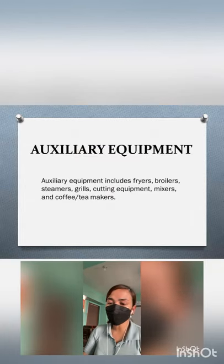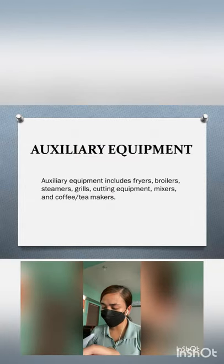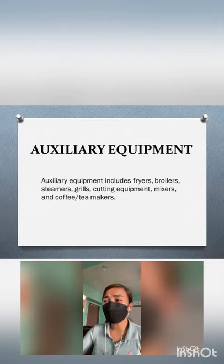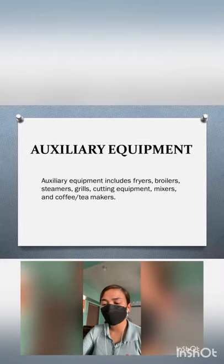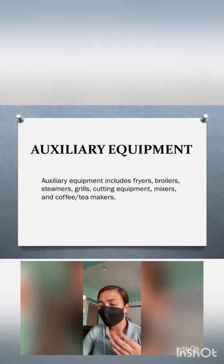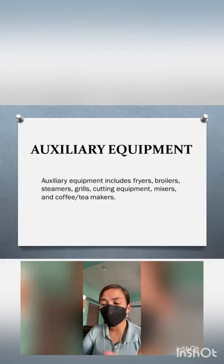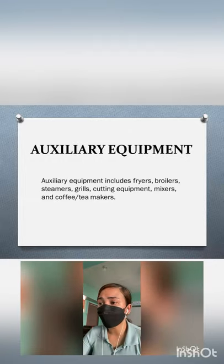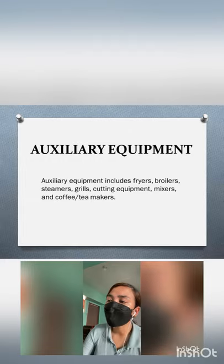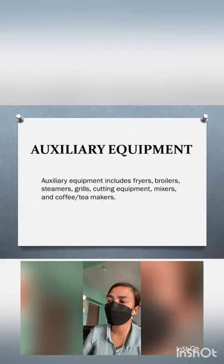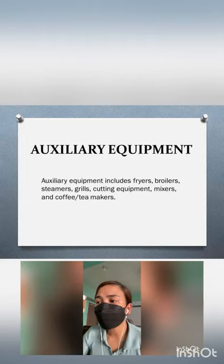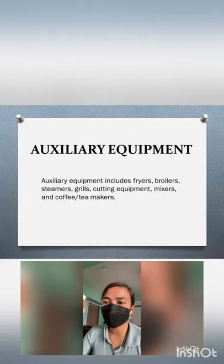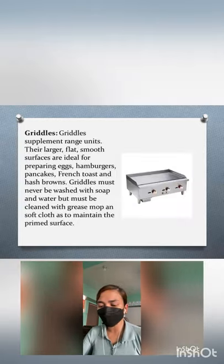Next, we have auxiliary equipment. When we say auxiliary, it means providing supplementary or additional help and support. Auxiliary equipment includes fryers, broilers, steamers, grills, cutting equipment, mixers, and coffee or tea makers.